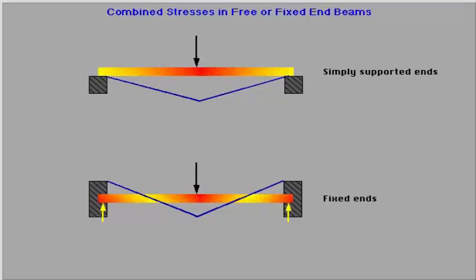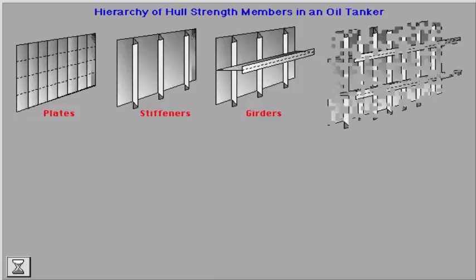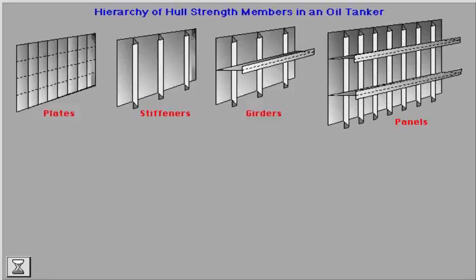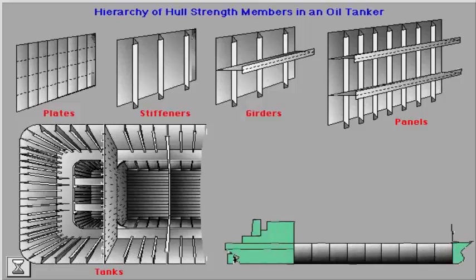Taking a look at the hierarchy of the hull strength members, we find that the hull girder is being built up with fore and aft ship. Click the hull strength members to get more information.